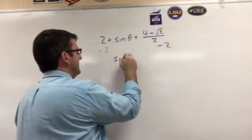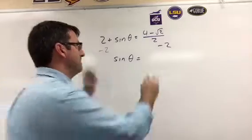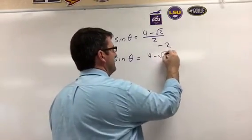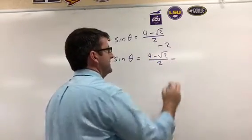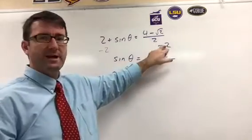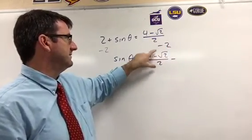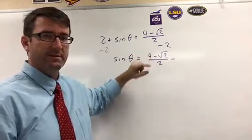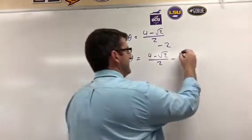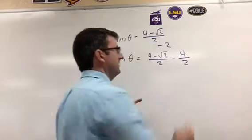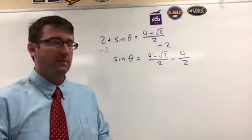So we get sine of theta equals 4 minus square root of 2 over 2 minus 2. And now when we subtract this 2, let's make that common denominator. So we need to write this as 4 over 2. 4 divided by 2 is the same as 2 divided by 1.